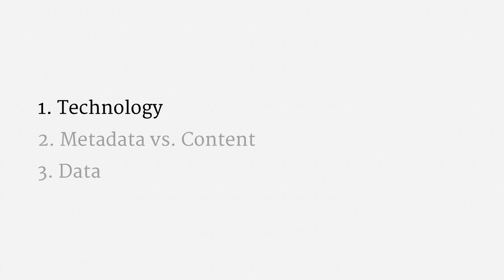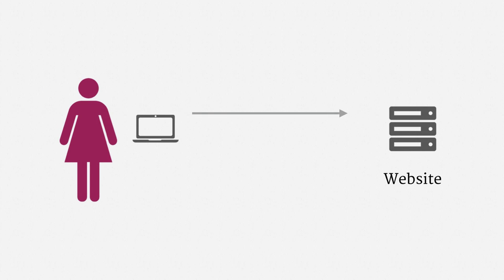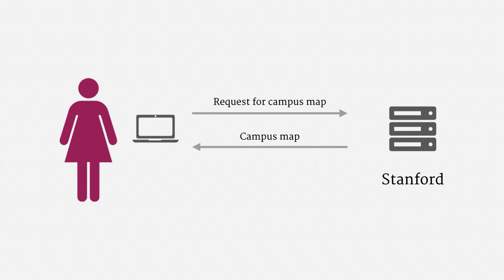So, let's start with the technology. Suppose Alice wants to load a web page on a particular website. Her browser will send a request for the web page, and the website's server will send back a response. The request might be for a static web page. Suppose Alice is still planning to steal from Stanford — Alice might look up a campus map on Stanford's website. Her browser will send a request, and the website will return the map. The URL, or web address, for the campus map might look something like this.